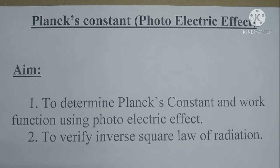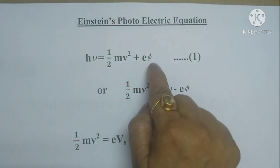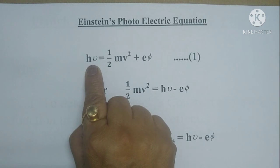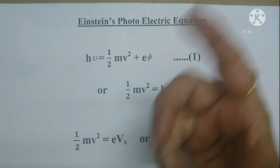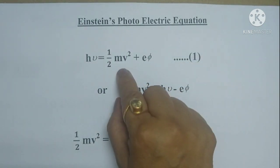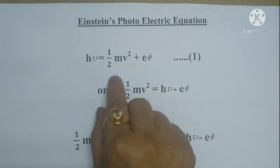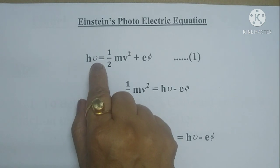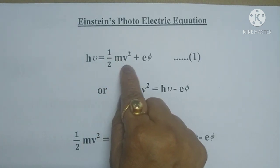Einstein was honored with the Nobel Prize for this discovery in 1921. He summarized his observations in the form of an equation: hν = ½mv² + eφ, where h is Planck's constant, ν is the frequency of the photon, ½mv² is the kinetic energy of the emitted photoelectron, and eφ is the work function of the material — the minimum energy required to eject an electron from the metal surface. So the energy of the photon hν is used in two ways: to eject the electron from the surface (eφ) and to impart kinetic energy (½mv²) to the emitted electron.